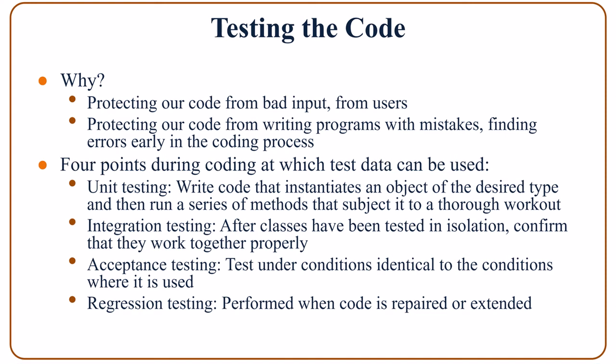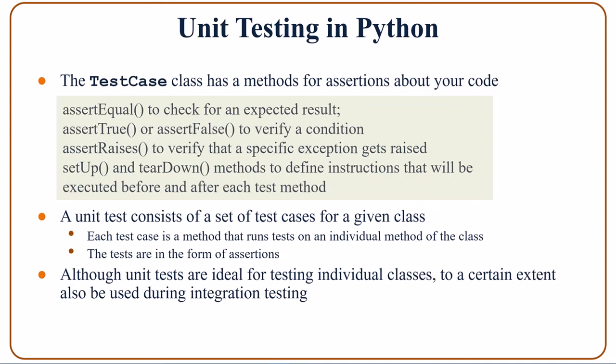We have unit testing, integration testing, acceptance testing, and regression testing. Unit testing involves writing code to create an object of the desired type and running a series of methods on it. After unit testing, integration testing can be done to confirm that all the classes can work together properly. Acceptance testing tests under conditions identical to those where the code is used. Finally, regression testing is performed when the code is repaired or extended.